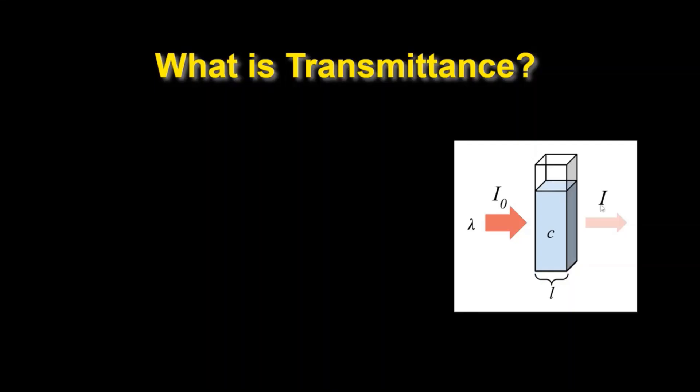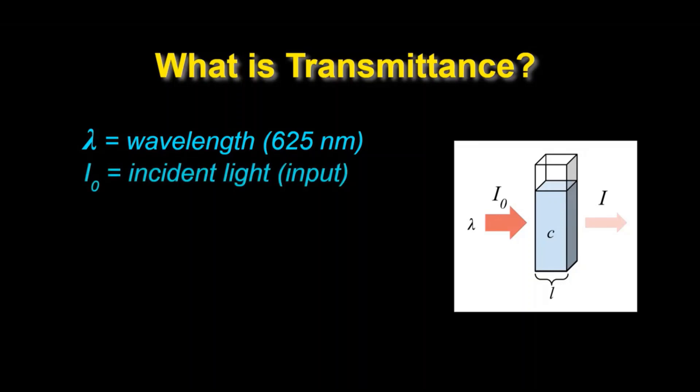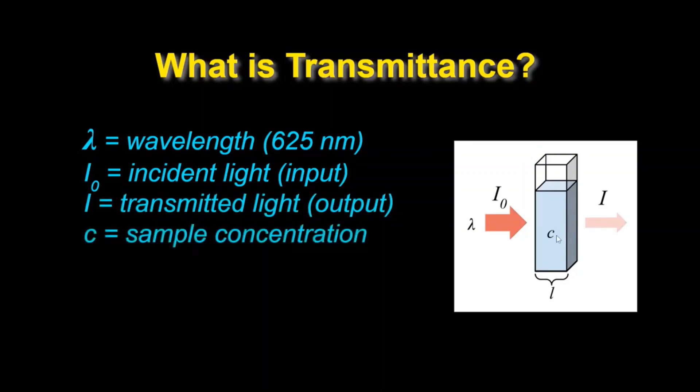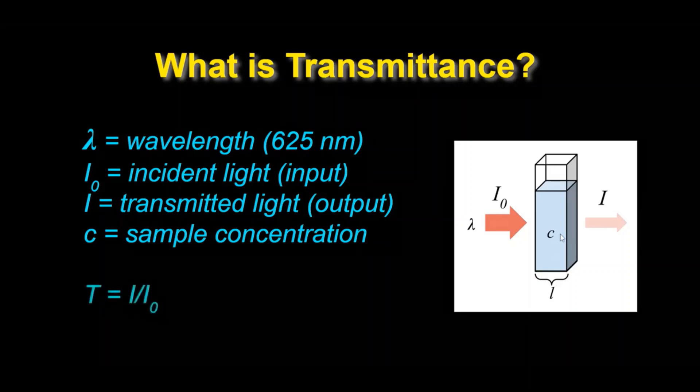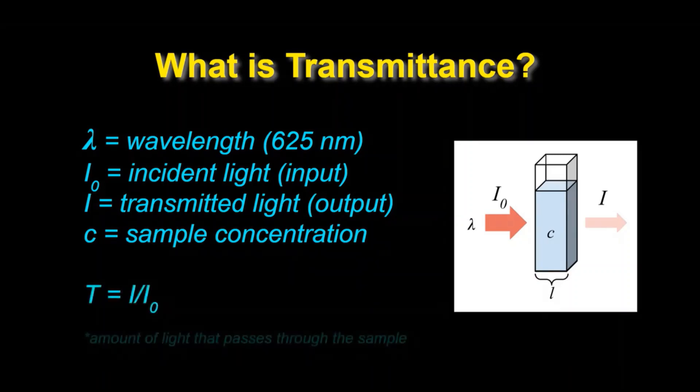Let's talk a little bit more about transmittance. Transmittance is the light that passes through the sample. In this experiment I used a wavelength of 625 nanometers. Now the transmittance is going to be found by dividing the transmitted light or the output by the incident light which was the input. This varies as a function of the sample concentration.